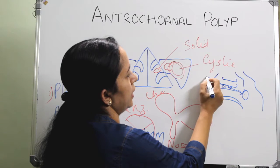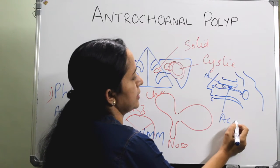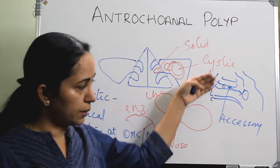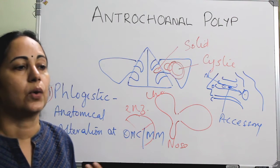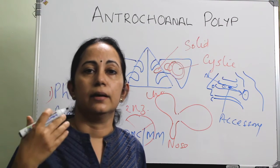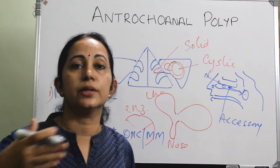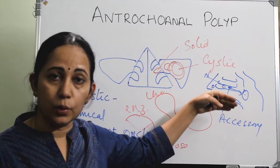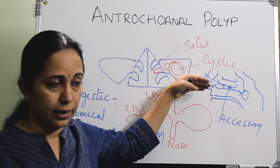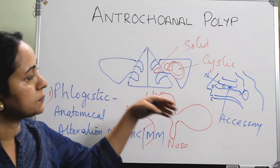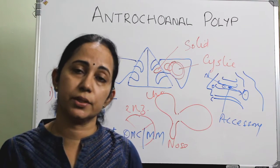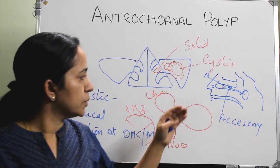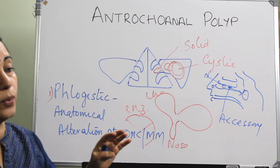Third, it usually goes through the accessory ostium. The accessory ostium is posterior to the natural ostium, so it comes through the accessory ostium and goes posteriorly. Fourth, the nasal mucociliary beating — cilia beat from anterior to posterior — so there is every chance of the polyp going posteriorly. So: more roomy, gravity dependent, accessory ostium is posterior, and cilia beat anterior to posterior.